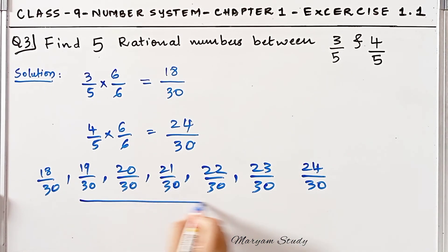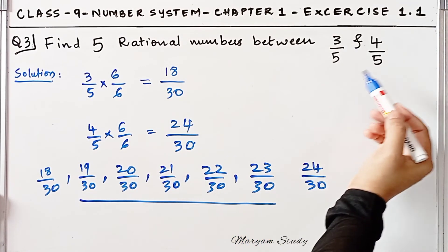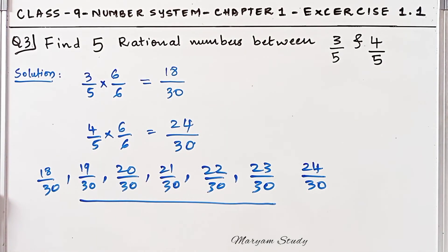These are the 5 rational numbers between 3/5 and 4/5. I hope it is clear, students. If you have any questions, you can ask in the comments. Thank you.